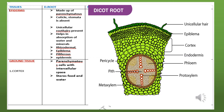Instead, there are unicellular root hairs present. So cuticle and stomata are absent, and we have root hairs instead. The function of root hairs is to help in the absorption of water and minerals.